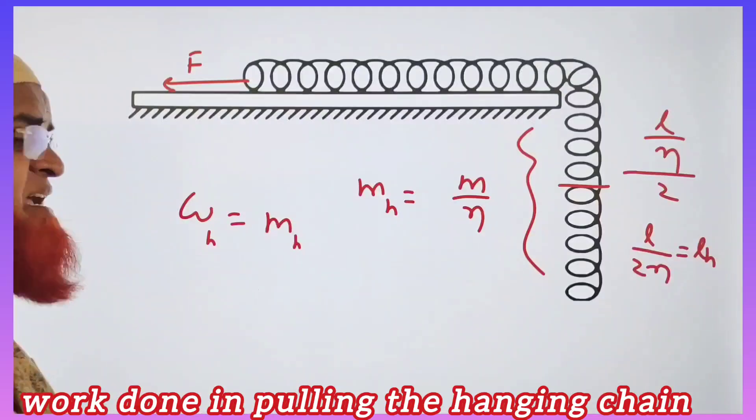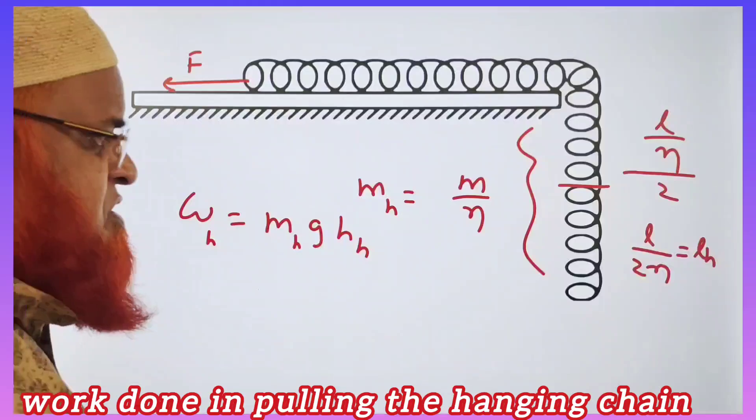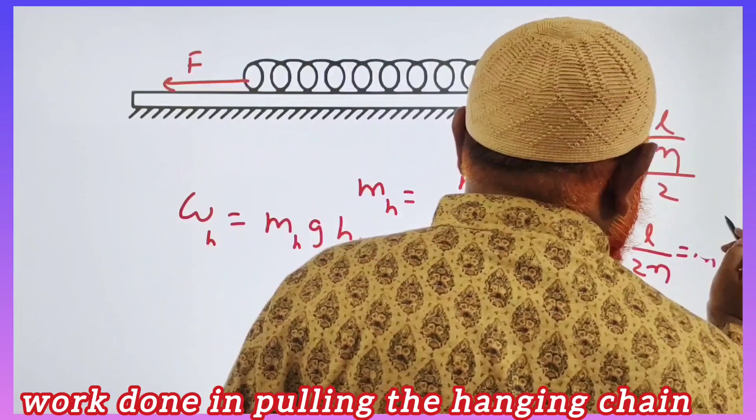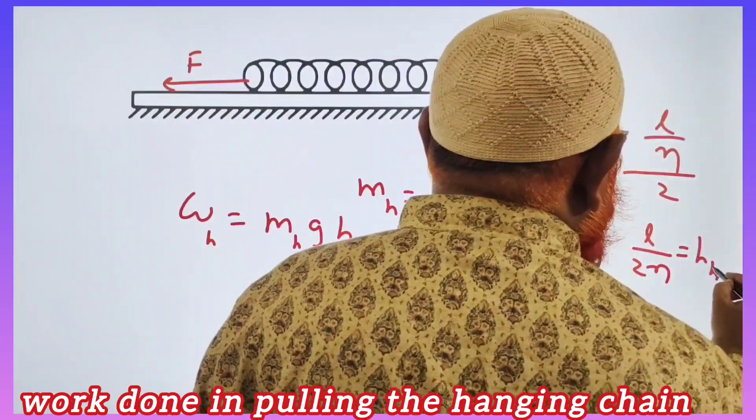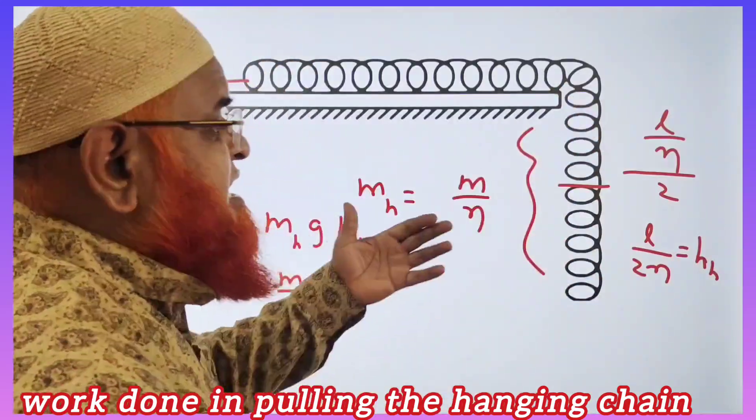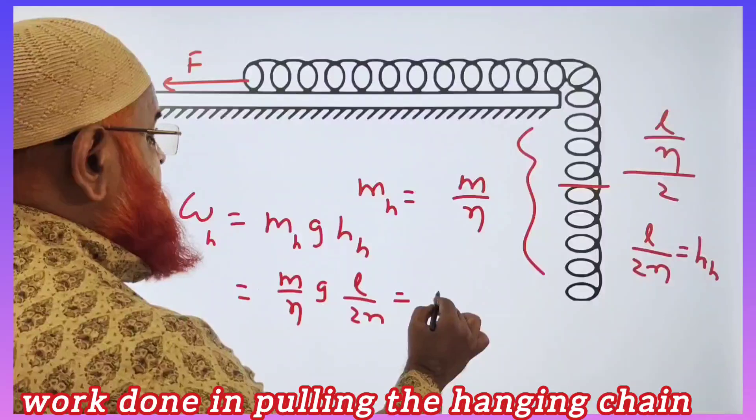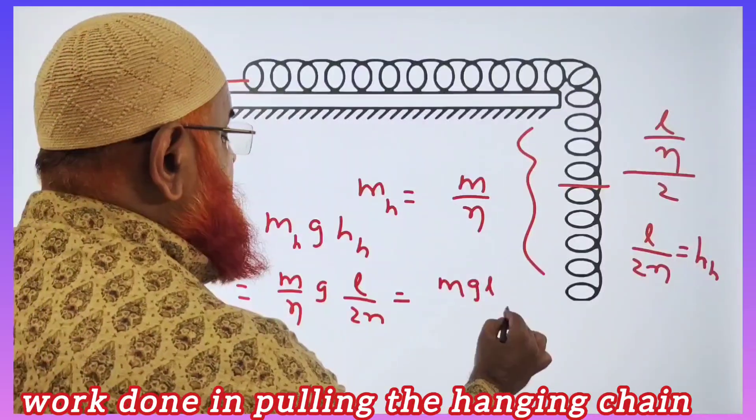This is mass of the hanging chain times G times height of the hanging chain. The height of the hanging chain is considered as L by 2N, therefore this can be taken as MGL by 2N.